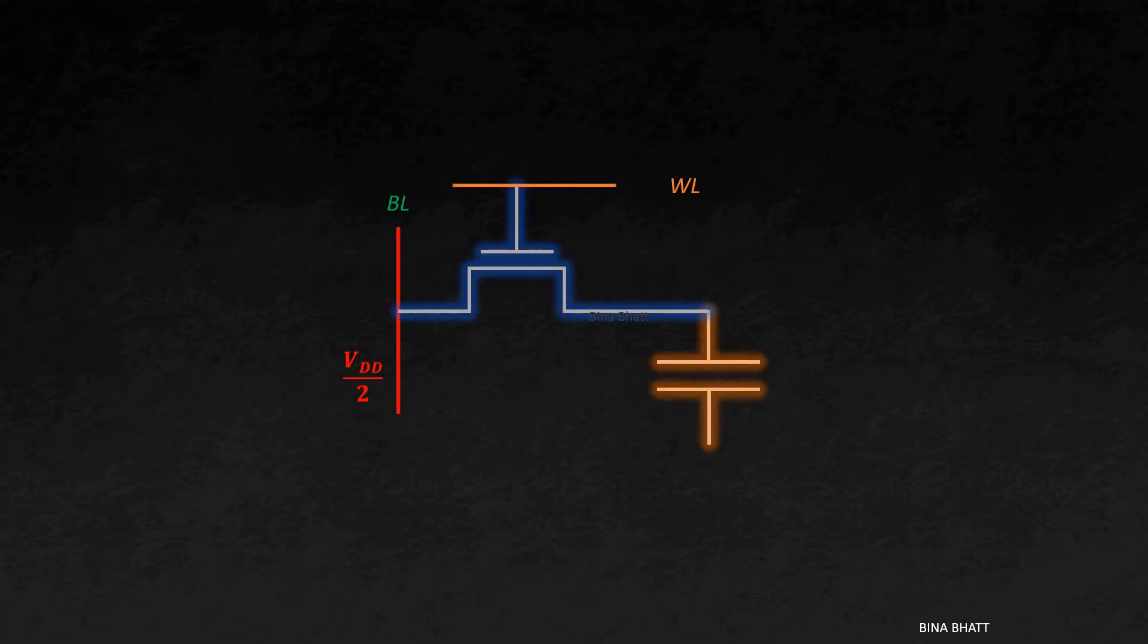Next, assert the word line. Now, this connects the capacitor to the bit line. Let's assume the cell holds a bit value of 1. Once the capacitor is connected to the bit line, the charge on the capacitor starts flowing to the bit line, causing a slight increase in the bit line voltage.